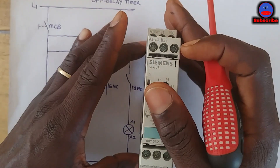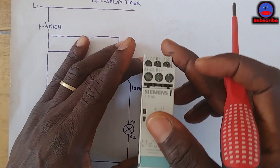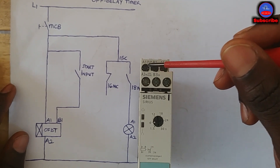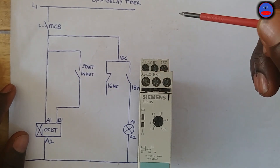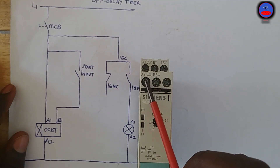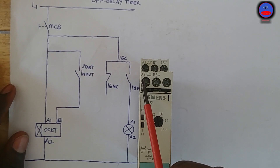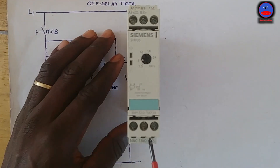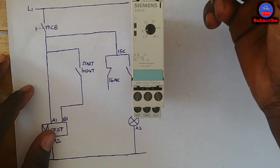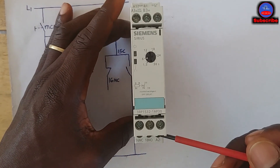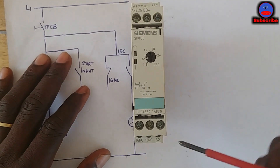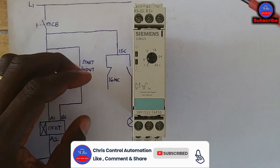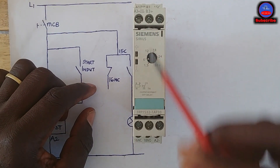This timer operates on two voltages: AC and DC. Down here we have terminal A1 — A1 is for 220 to 240 volt AC, so if you want to use the timer on AC you use this side. Up top we have terminal A3, which is for 24 volt DC. The A2 terminal is common to both AC and DC. So for DC the coil terminals are A3 and A2.